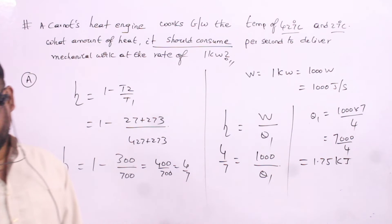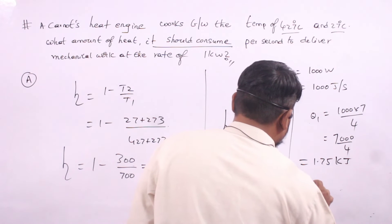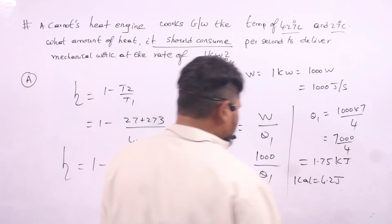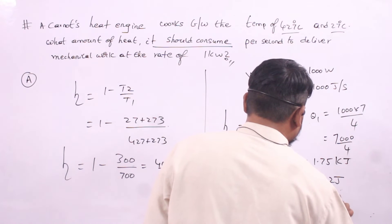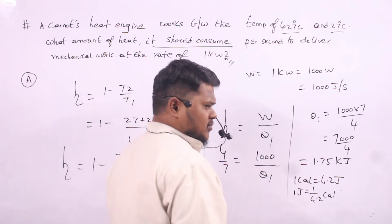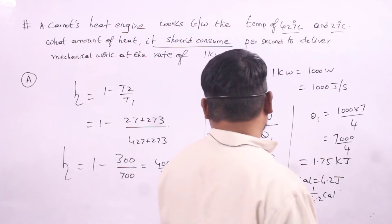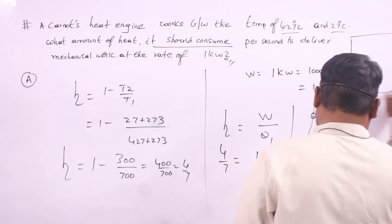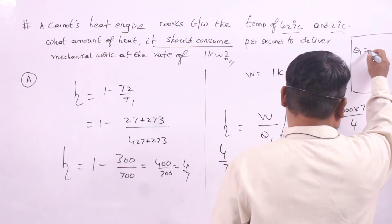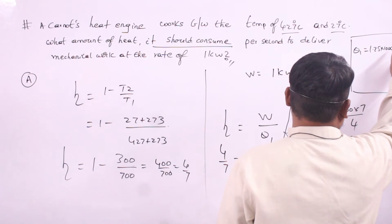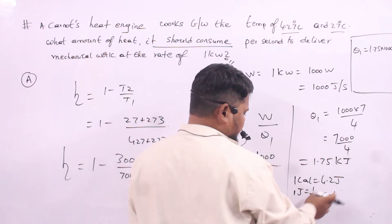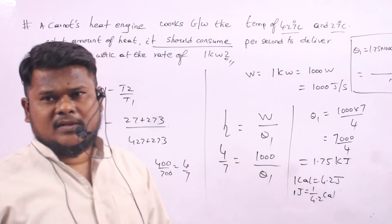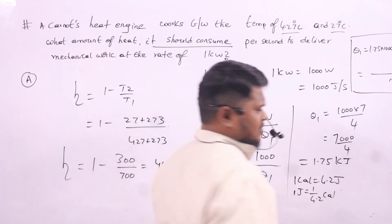If we want to convert this into calories: 1 calorie equals 4.2 joules, so 1 joule equals 1 by 4.2 calories. Therefore Q1 equals 1.75 multiplied by 1000 multiplied by 1 by 4.2 calories. Doing this calculation gives the answer in terms of calories.